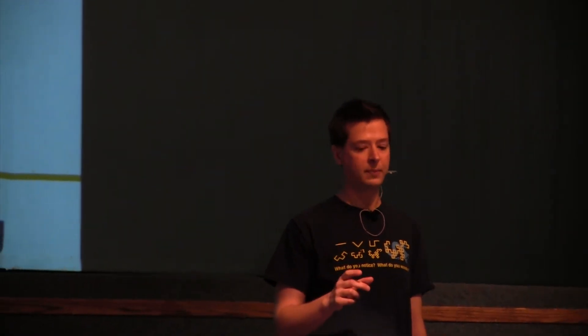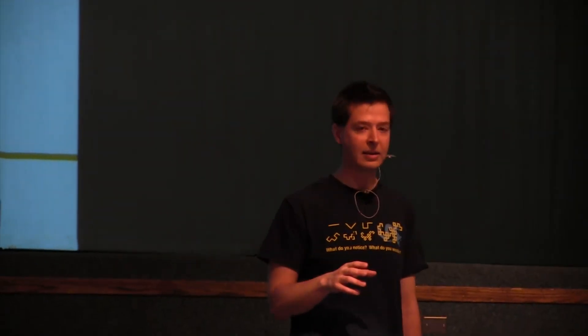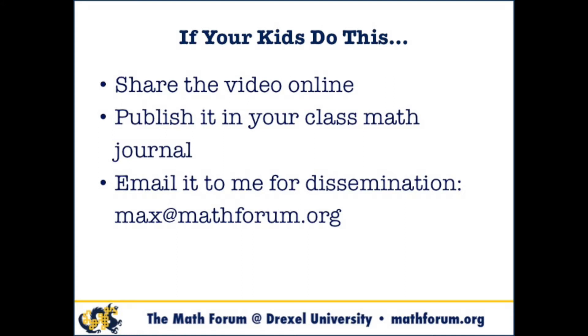And then the next day, he came in and he said, Ms. Gray, I want to make a video explaining to kids if they made my same mistake, why it's wrong. So this is a still from a video he makes where he explained where he over-counted some in his partial products method. If your kids do thinking like that, is there a way for them to make a video? Could they share the video online? Do you have a class math journal that they could publish their thinking in? Or maybe you could just email it to me, and I could find ways to let other kids and teachers know.